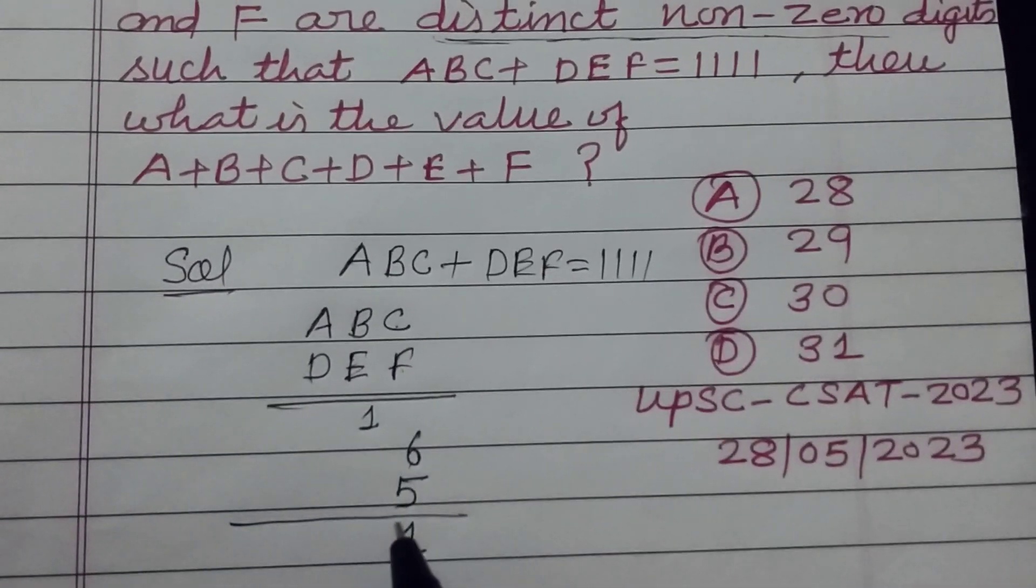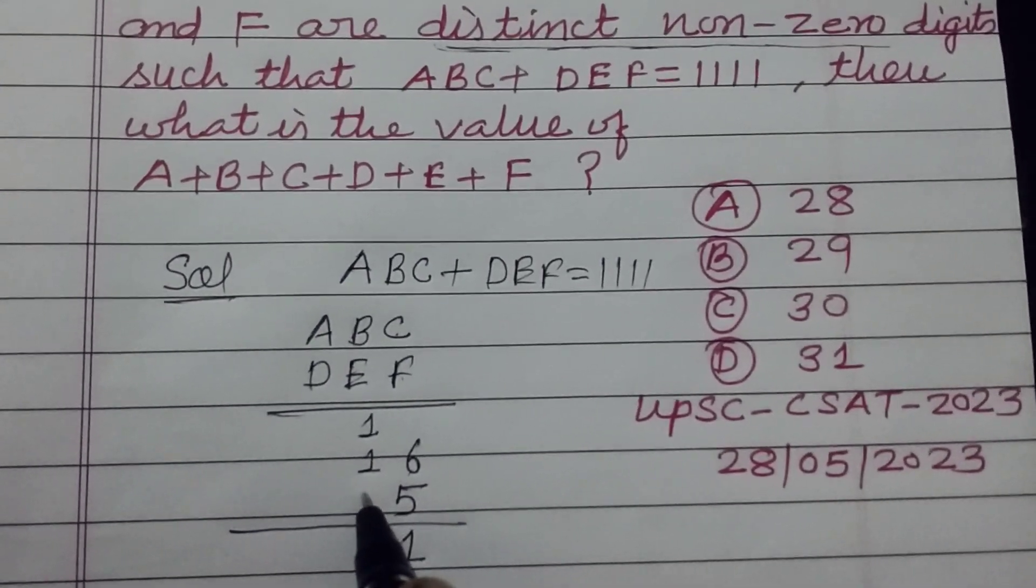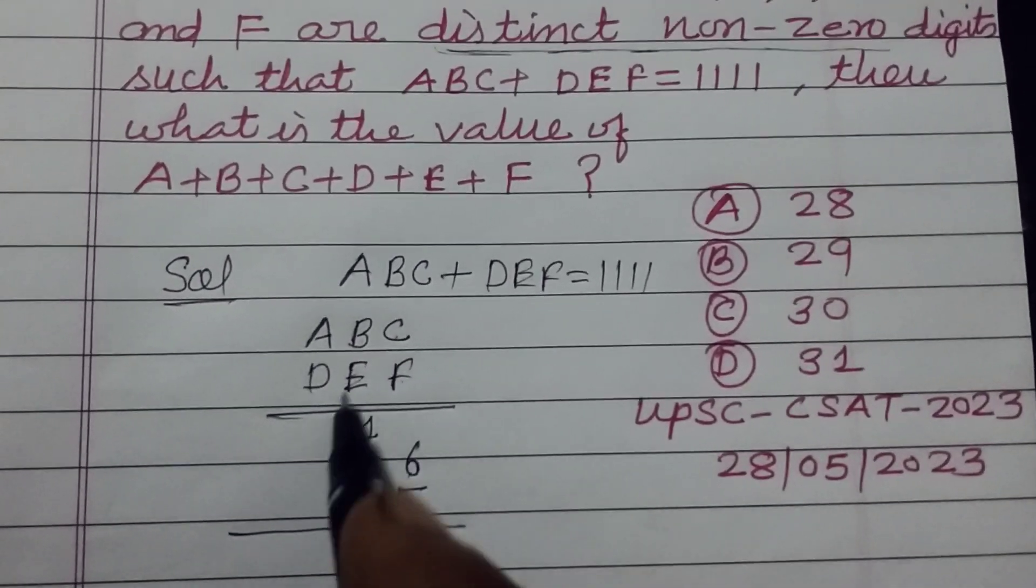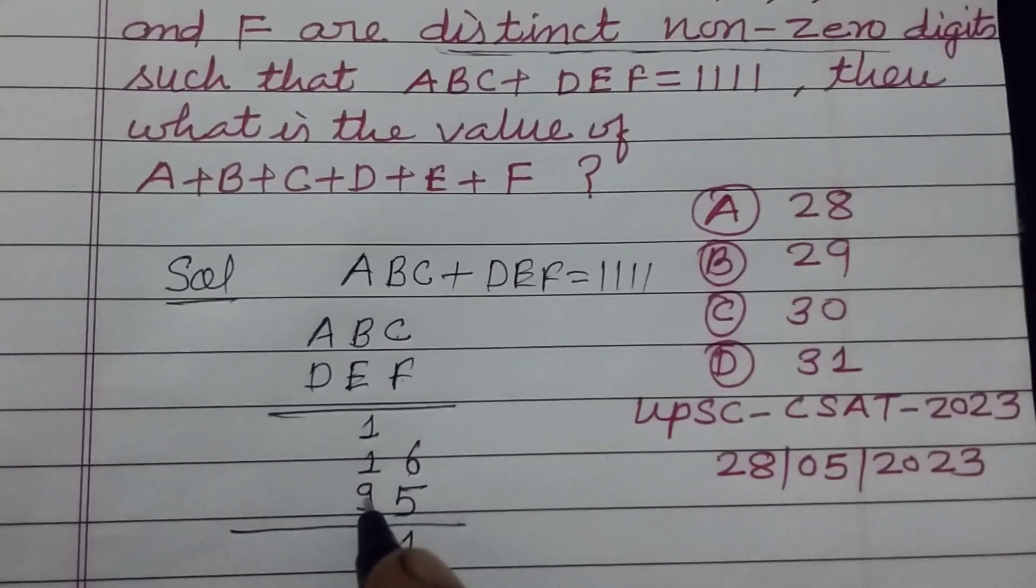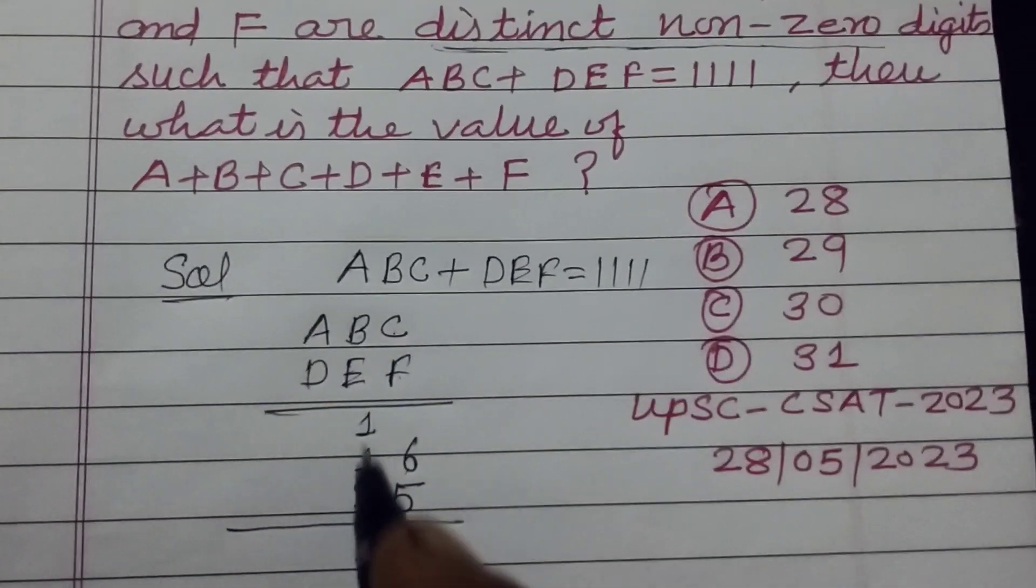Now we write this is 1. Here B is 1 and E is 9. 9 plus 1 is 10. 10, 1, 11 also. So 1 carry again.